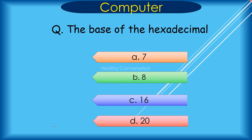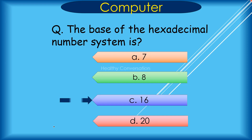Question: The base of the hexadecimal number system is A. 7, B. 8, C. 16, D. 20. Correct answer is C. 16.